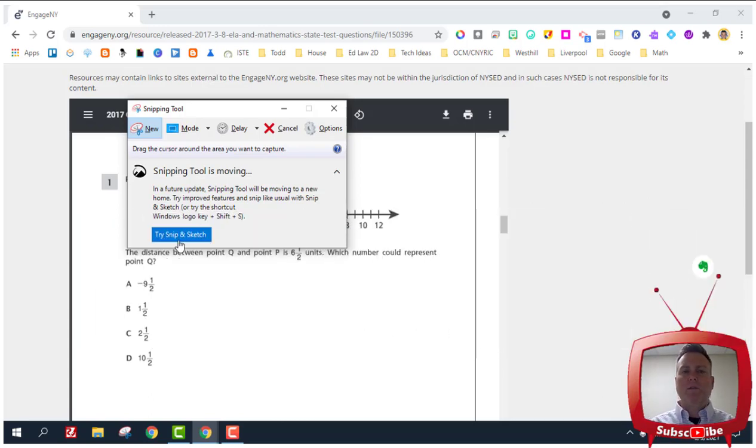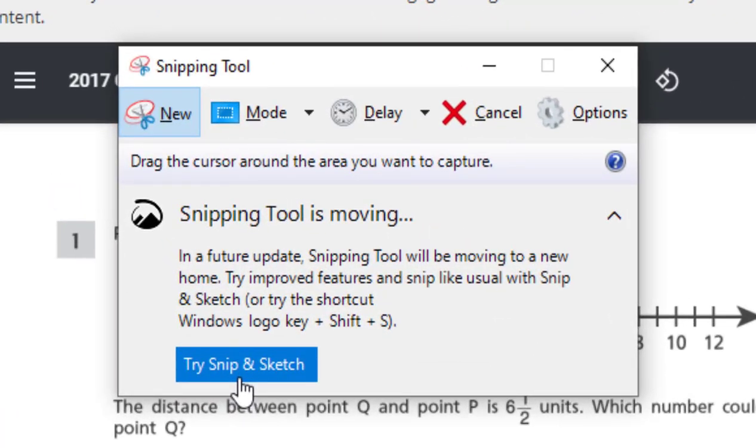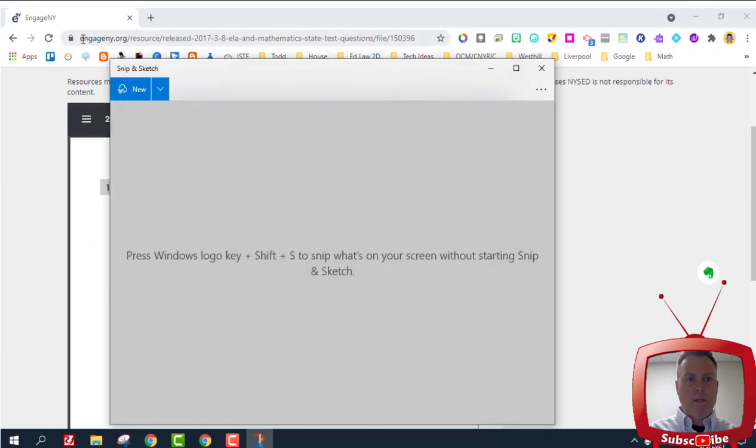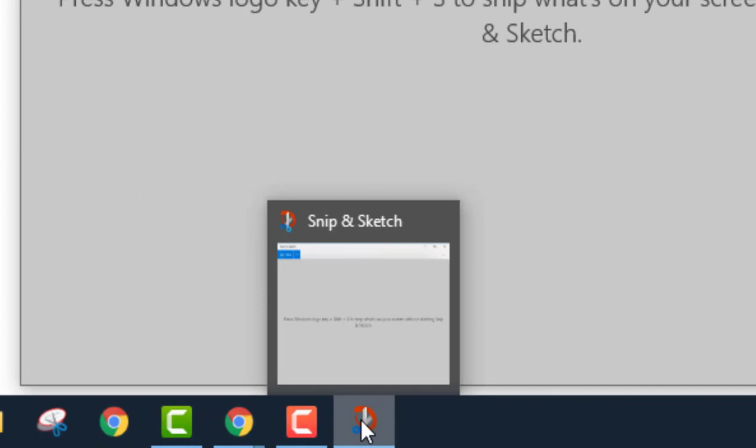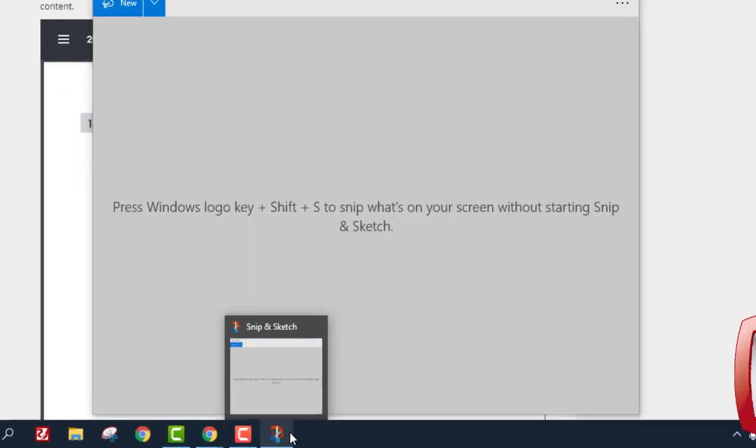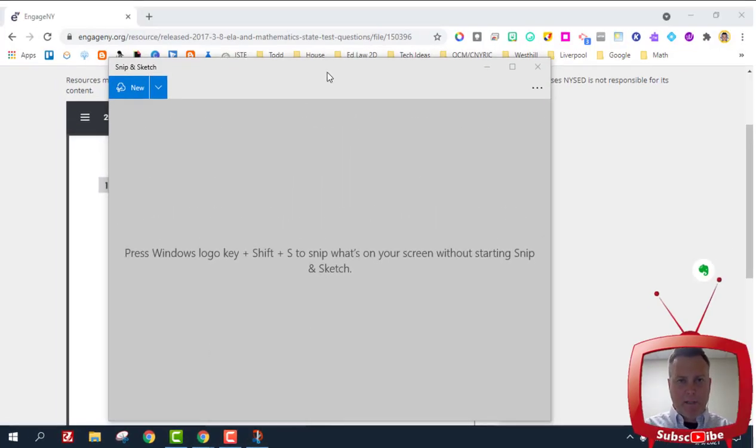You'll see a blue button that says try Snip and Sketch. When I click this, a window pops up and at the bottom tray you'll see a new icon. What I always do when I want something I use on a daily basis is right-click on that icon and pin this to the taskbar.